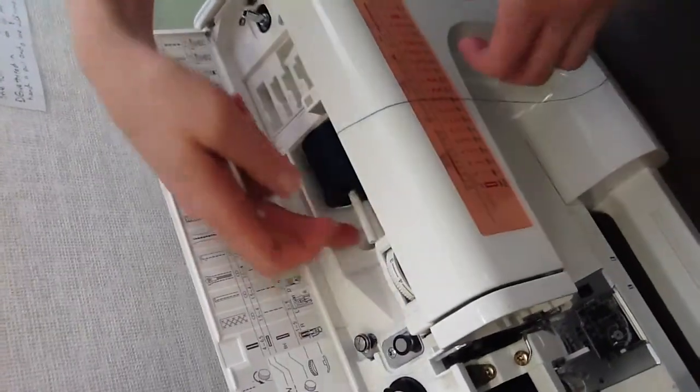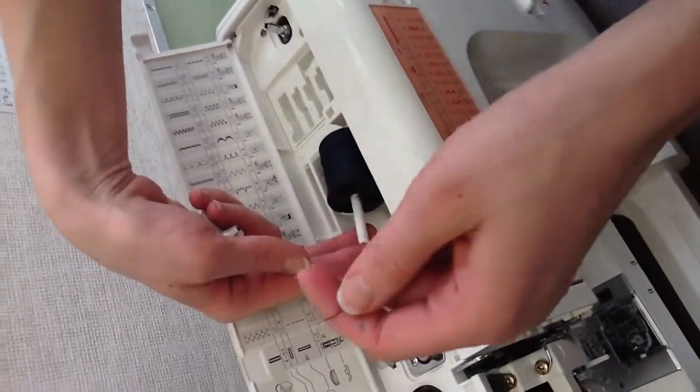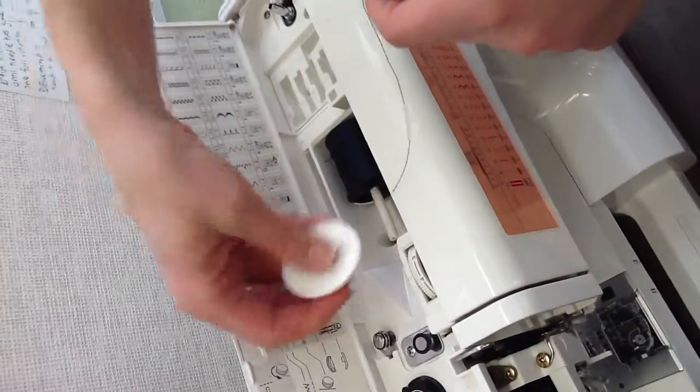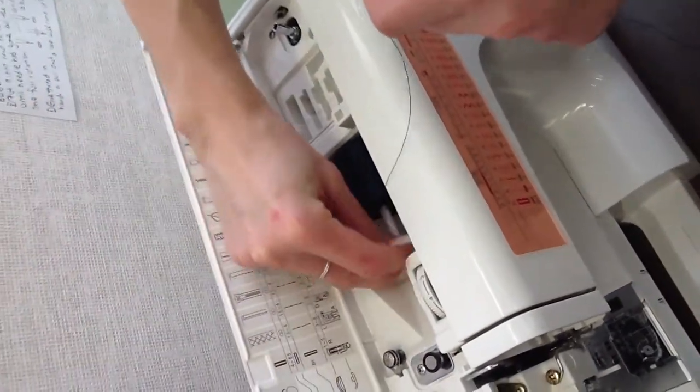So when you're winding a bobbin on the new sewing machine, the first thing you want to do is put your spool of thread onto your spool pin and put your cover on.